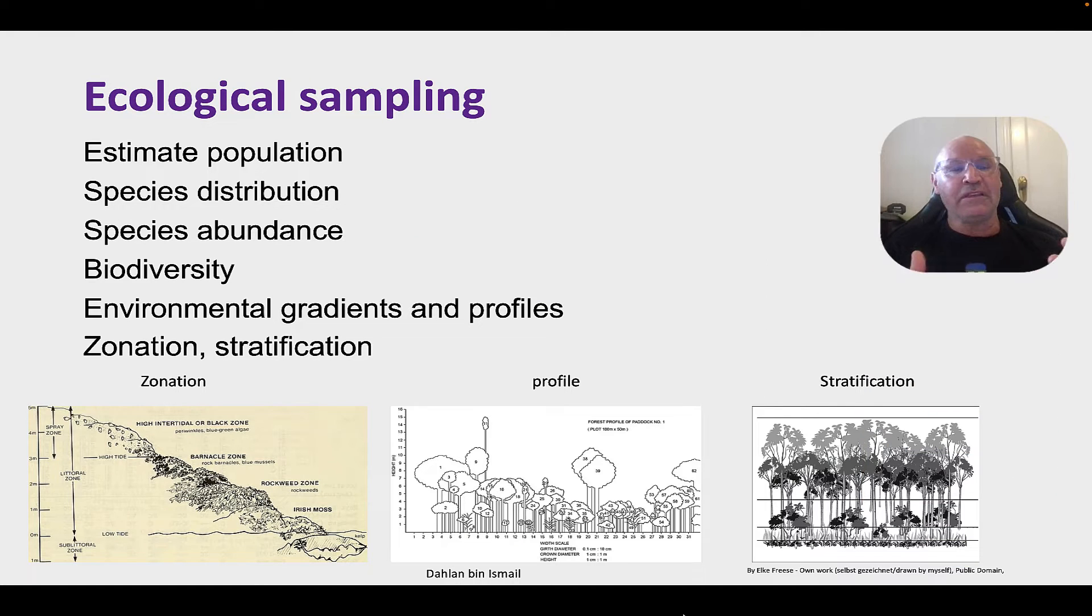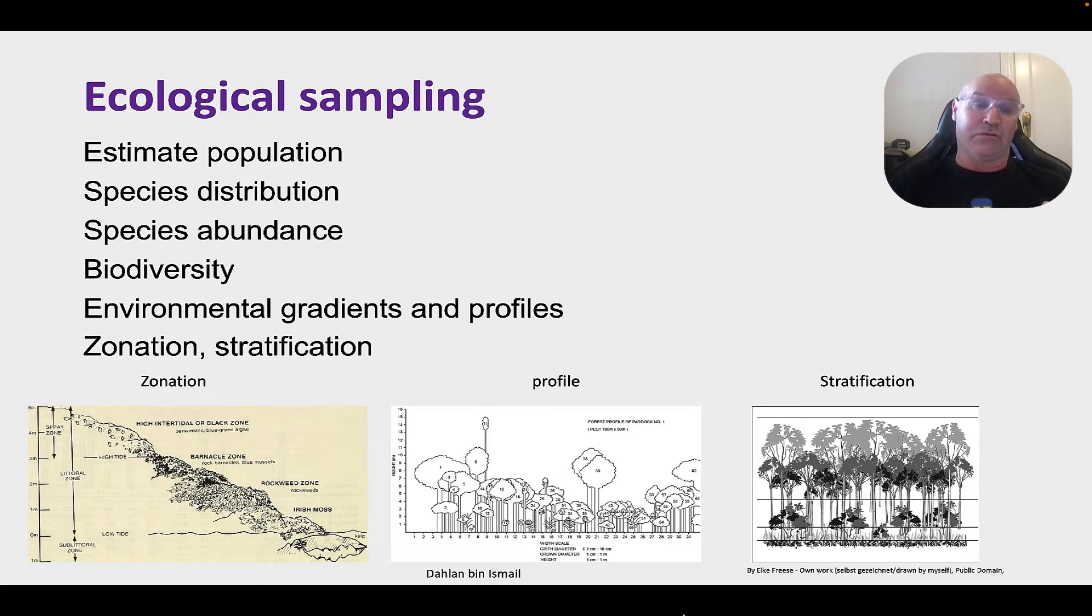There's lots of things that we can measure. We can use it to work out or estimate the population, to determine the distribution or spread in the location of the species, the abundance of the species, to calculate biodiversity, to investigate environmental gradients, to see how the abiotic and biotic factors change across a geographical area. And that's linked to zonation. And then also we're going to have a look at how the ecosystem is stratified.